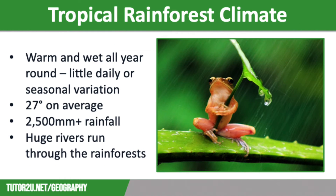So let's have a look at the climate in the tropical rainforest biome. Tropical rainforests are located on or close to the equator. This means they are warm and wet all year round with little daily or seasonal variation. Temperatures are around 27 degrees on average and annual precipitation usually exceeds 2,500 millimetres, compared with between 800 and 1,400 in the UK. The high level of rainfall means that a huge amount of water feeds the enormous rivers that often run through rainforests, such as the Amazon in South America and the Congo in Central Africa.